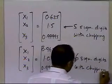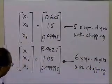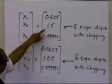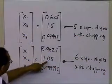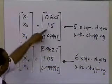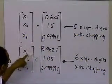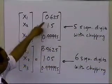So you do have a big difference between what you get with 6 significant digits with chopping and 5 significant digits with chopping. Just look at the numbers for x2, 1.05 here, 1.5 here, x1, 0.9625 here, 0.625 here.